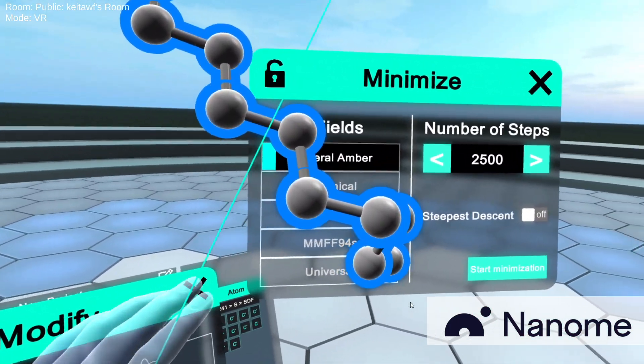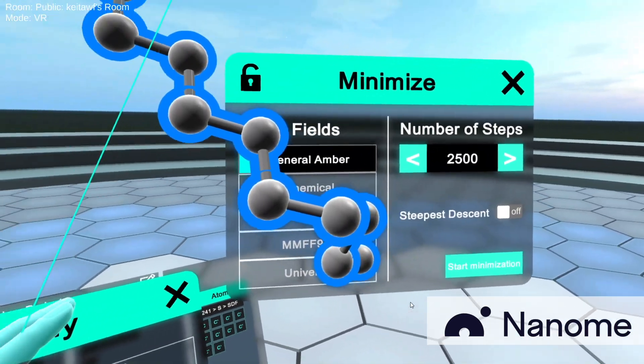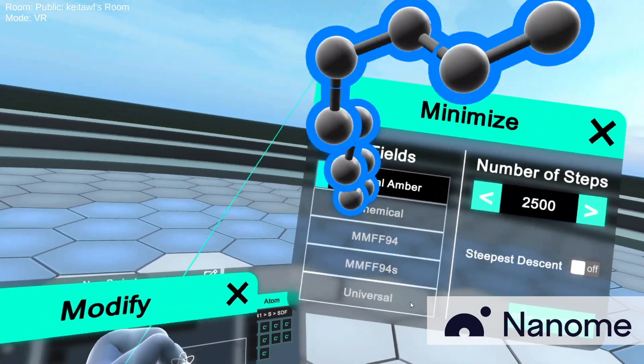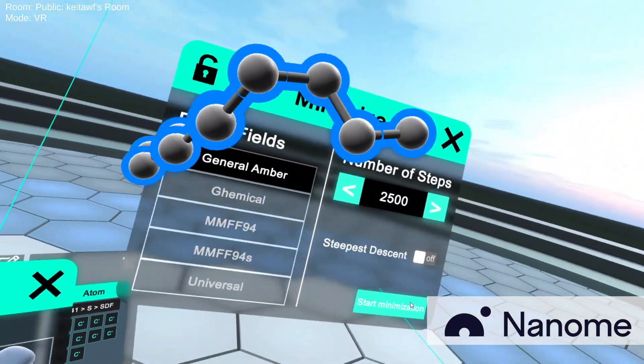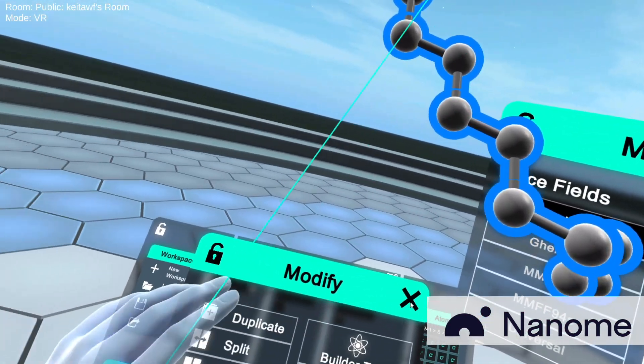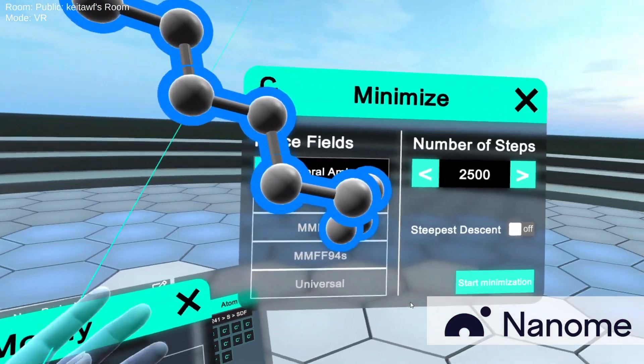So you can select an entire macromolecule and then use the minimization if you want to. But if you just want to minimize a small molecule, then you just want to select this and then start with the minimization. So that's how you pretty much start drawing from scratch.